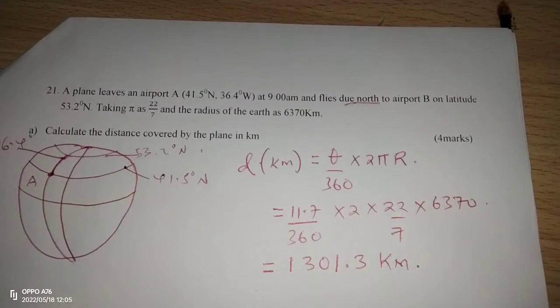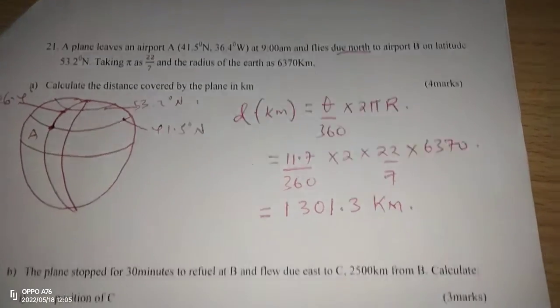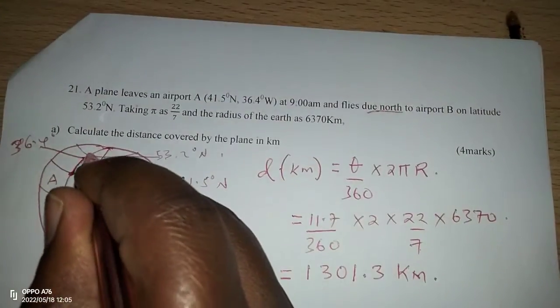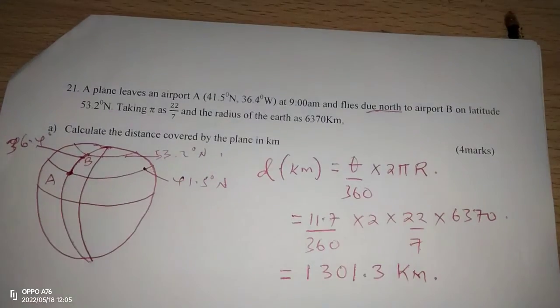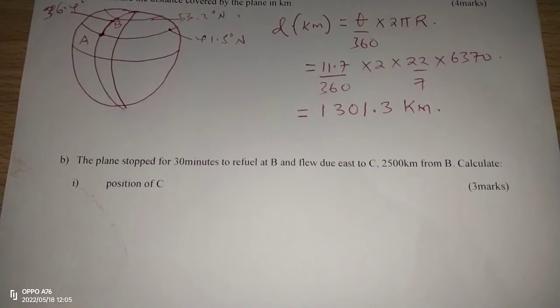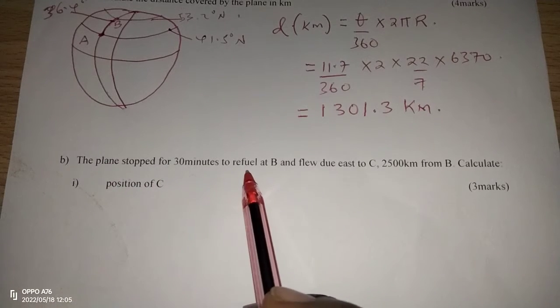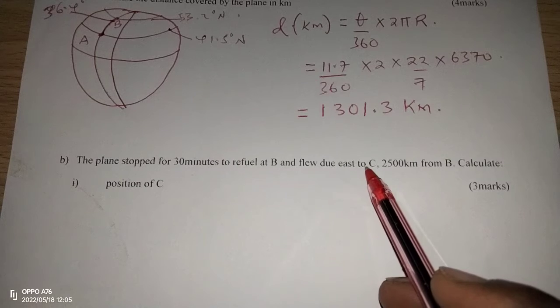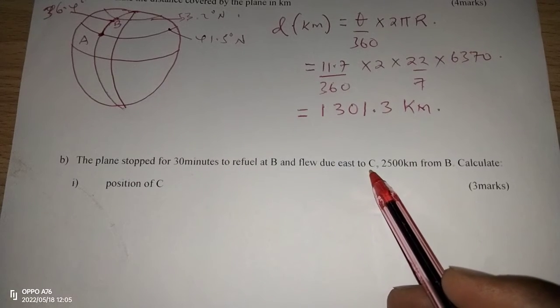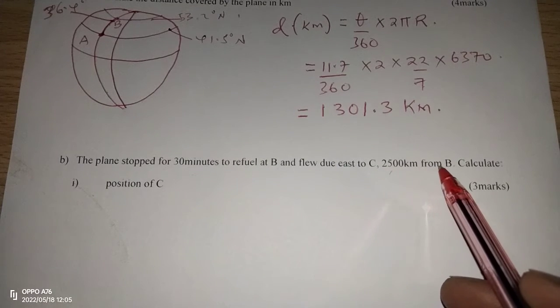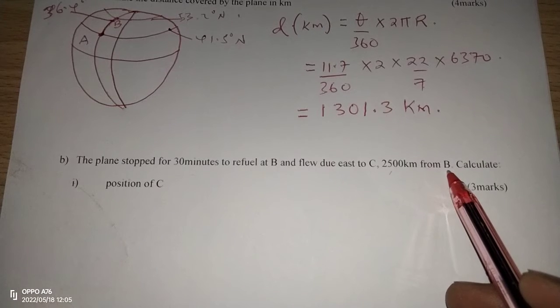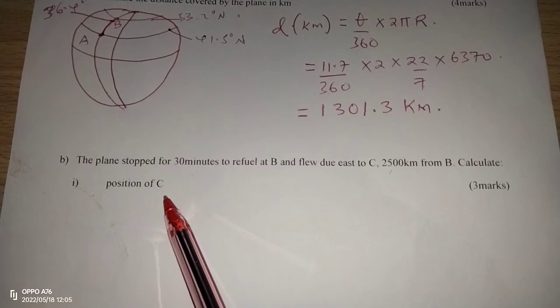So that is the distance from A to B, which is at the north. Then we are given more questions. Part C of this question says: The plane stopped for 30 minutes to refuel at B and flew due east to C, 2500 kilometers from B. Calculate the position of C.